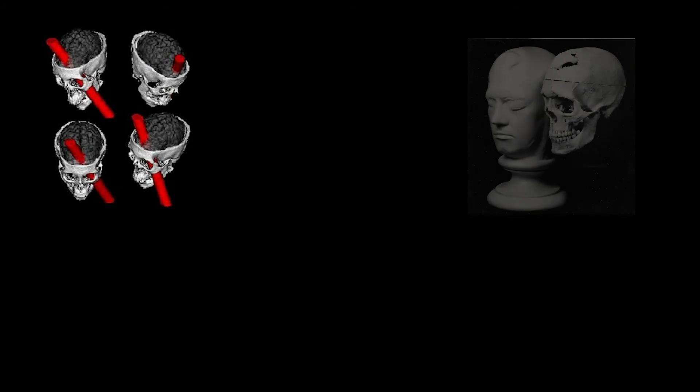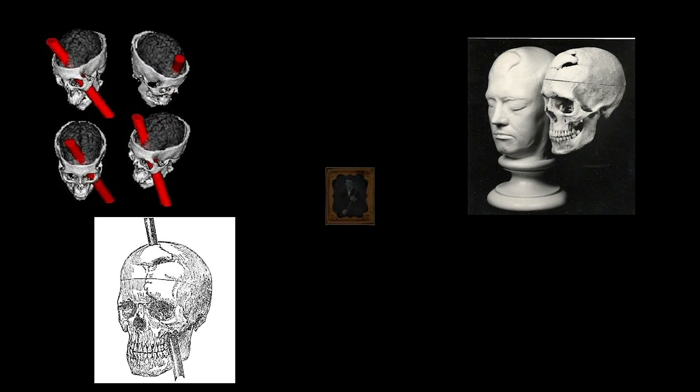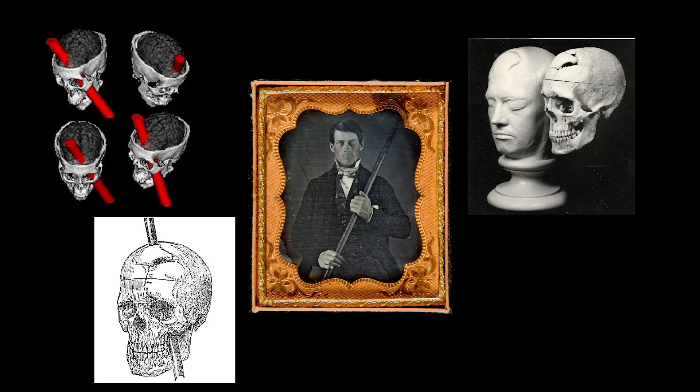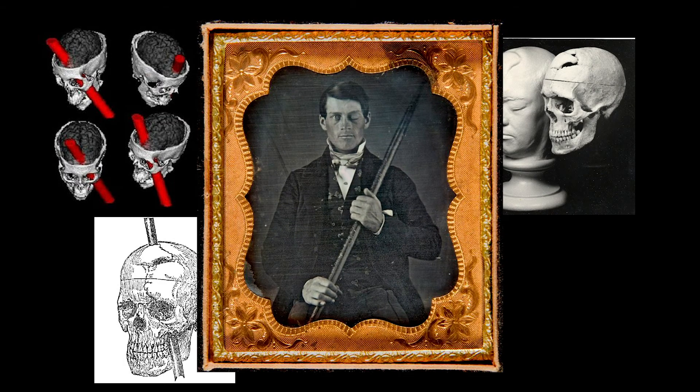Previous to the accident, his family, friends, and co-workers described him as mild-mannered, extremely hardworking, and extremely calm. He was well liked by those around him. However, after the incident, he became stubborn, hot-tempered, aggressive, and unreliable. It was the damage to his frontal lobe that caused his shift in personality.